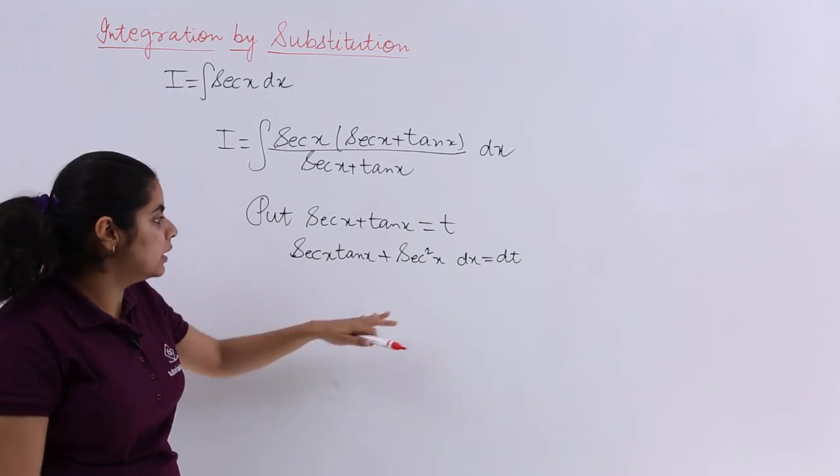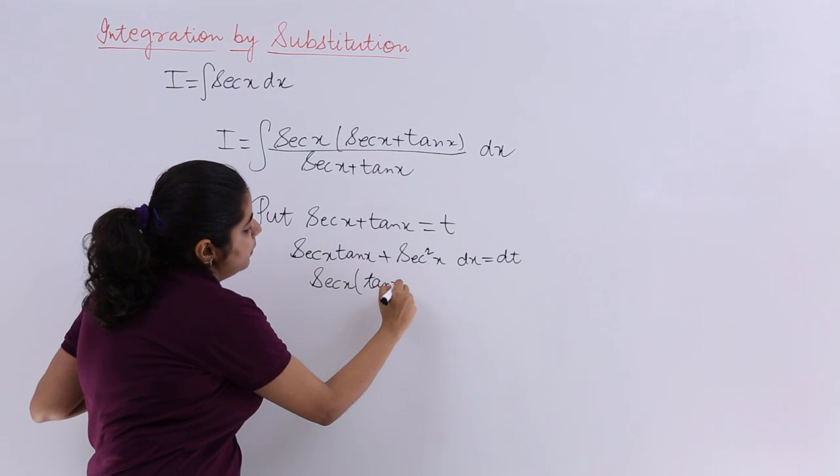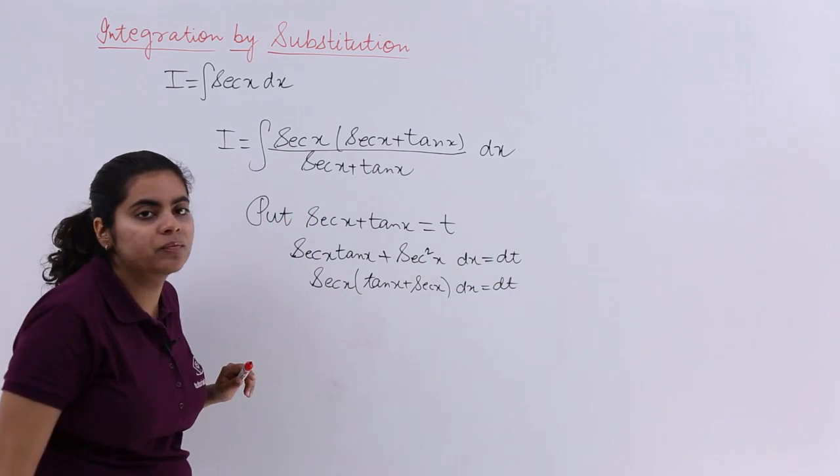Now, wow! We have something common. It is sec(x) as common: tan(x) plus sec(x) inside, dx already, dt already.